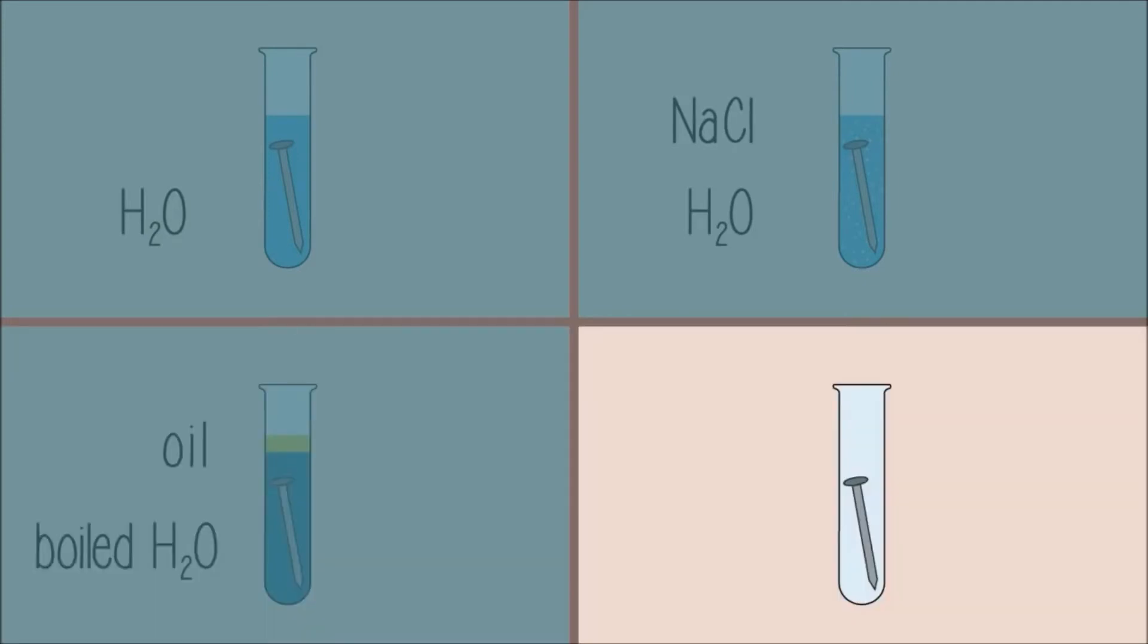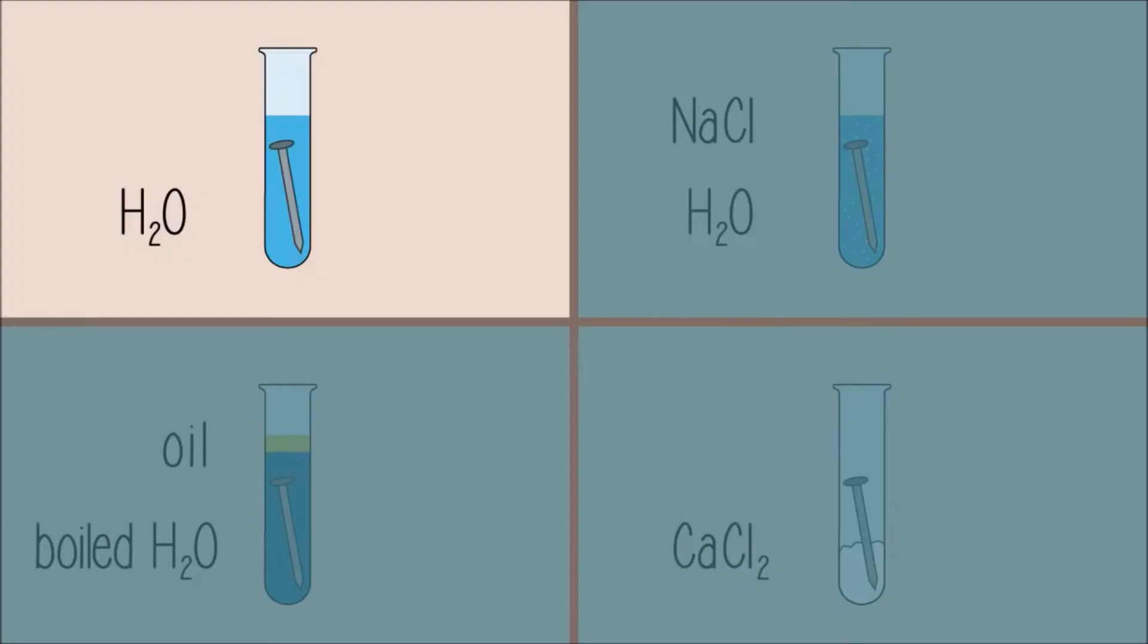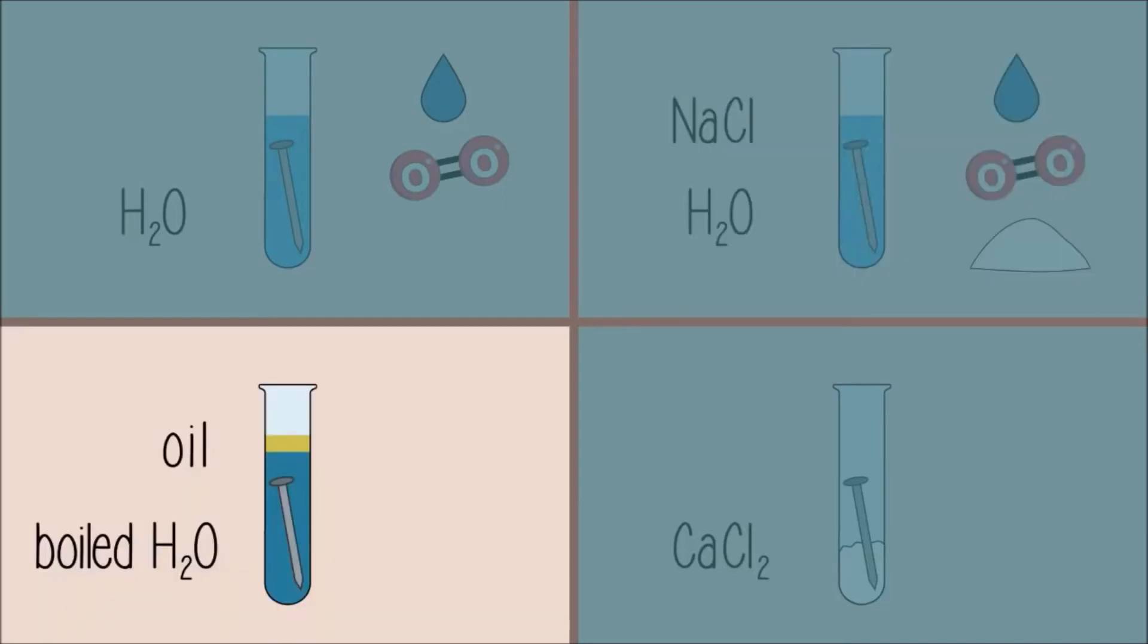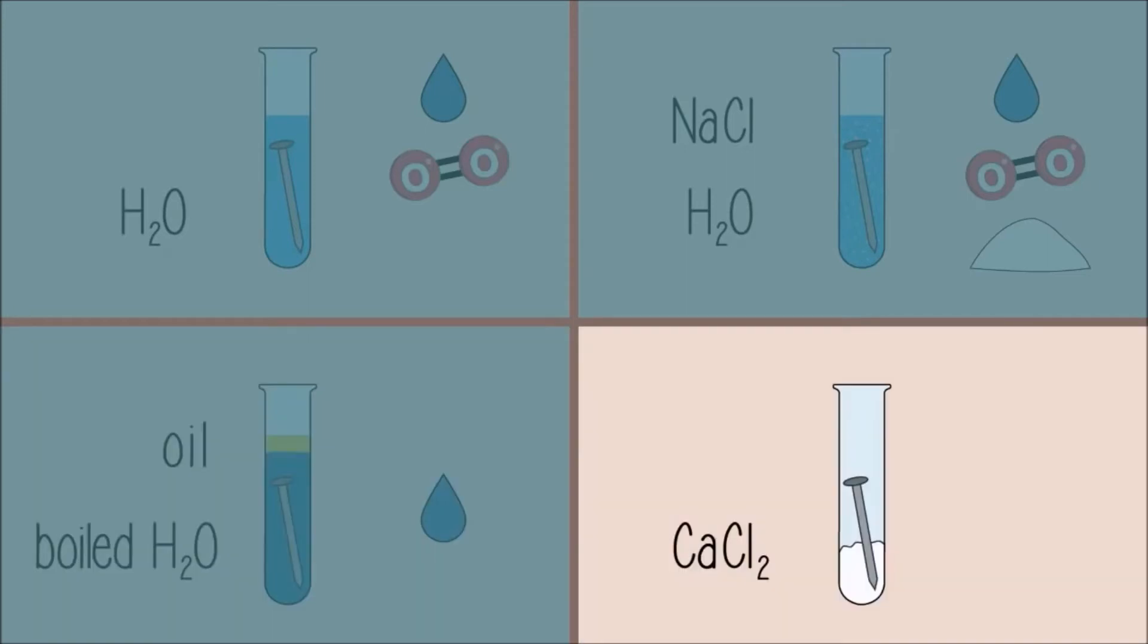In the last test tube, add a spoonful of calcium chloride. Calcium chloride removes moisture or water. So, in the first test tube, the nail is exposed to oxygen and moisture. In the second test tube, the nail is exposed to oxygen, moisture, and salt. In the third test tube, the nail is only exposed to water. In the fourth test tube, the nail is exposed only to oxygen.